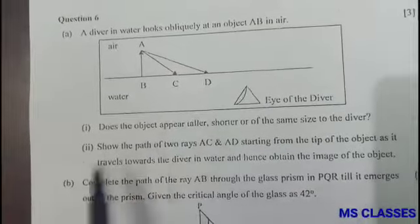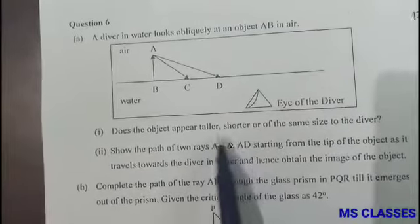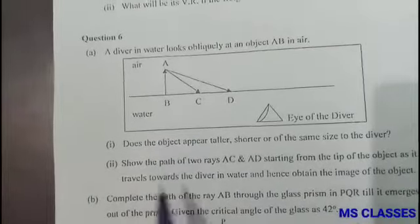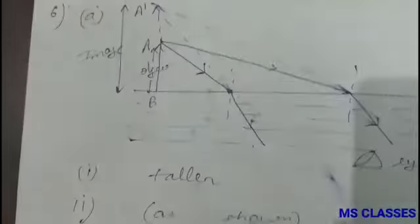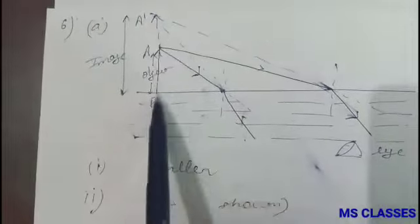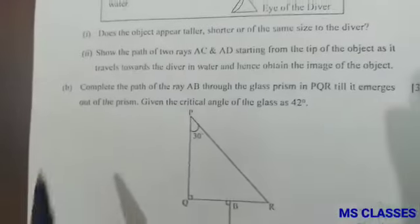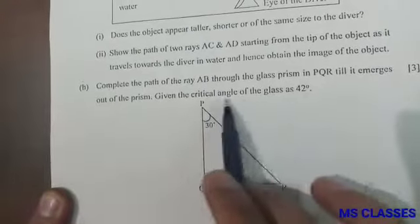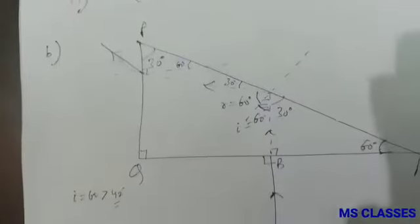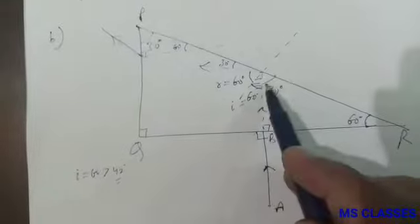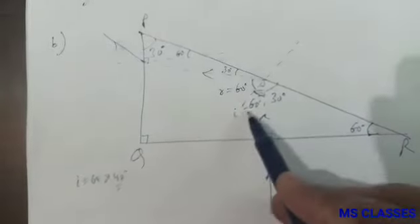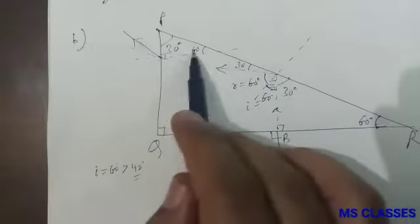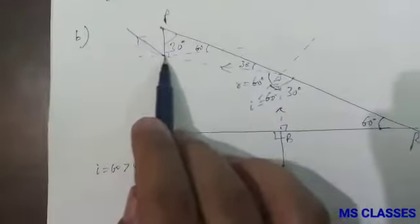Question 6(a): We have to draw the diagram. First, does the object appear taller, shorter, or of the same size to the diver? The object appears taller. We can see with the help of the diagram rough sketch where you can see the object appears taller. Part (b): Complete the path of ray AB through the glass prism PQR till it emerges out of the prism, given that the critical angle of glass is 42 degrees. Here, this ray is going straight. This is 30 degrees because this is 90 and this is 60, so i is 60 degrees, which is greater than 42 degrees, so TIR will happen. R will also be 60 degrees, and the ray will go like this because from denser to rarer it will move away from the normal.